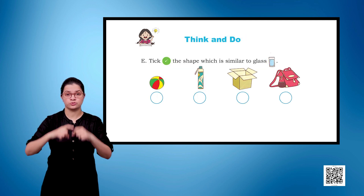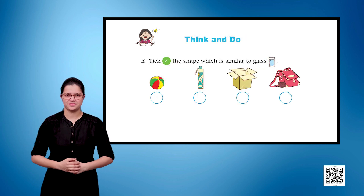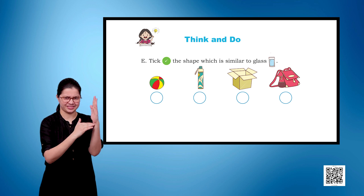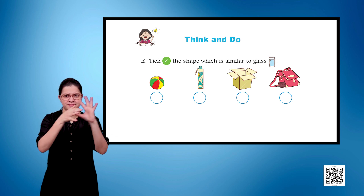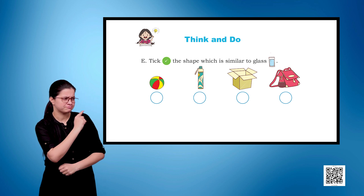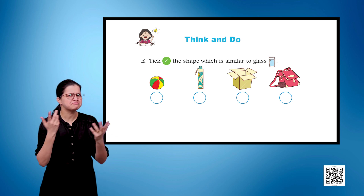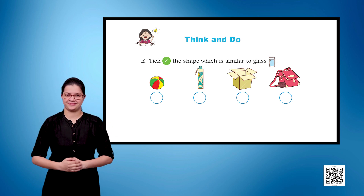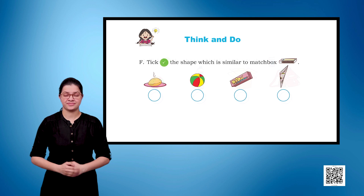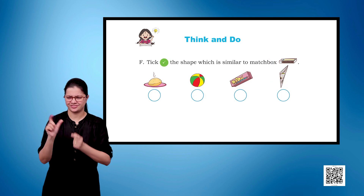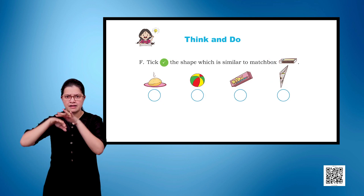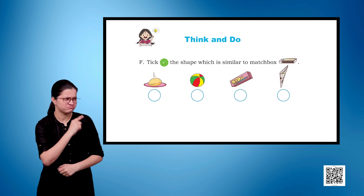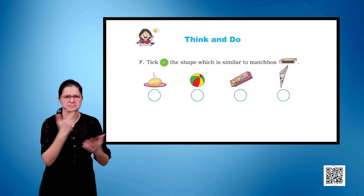E. Tick right for the shape similar to a glass. D. Tick right for the shape similar to a matchbox.